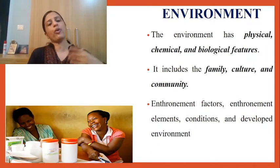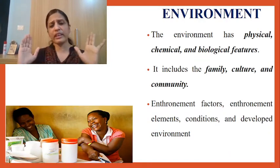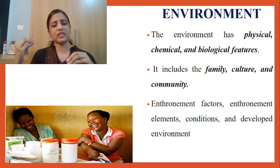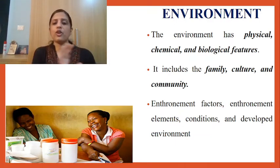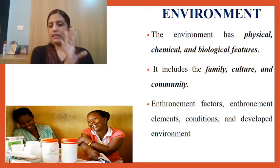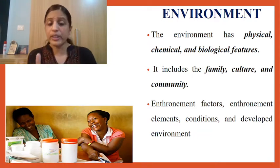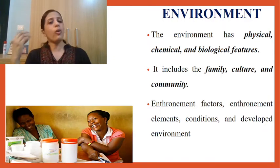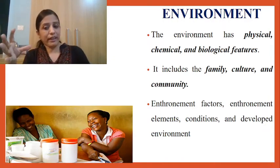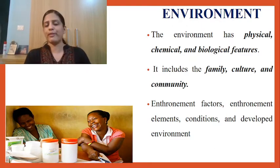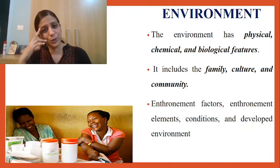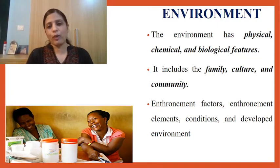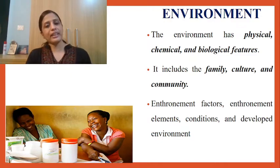Coming to environment — according to Orem, environment has physical features, chemical features, and biological features. She also said that environment includes family, culture, and community, meaning she discussed the external environment clearly. In addition, Orem introduced new terms: environmental factors, environmental elements, environmental conditions, and developed environment. However, she has not discussed these in much detail in her theory, which comes as a limitation, because she used many concepts without adequate explanation.